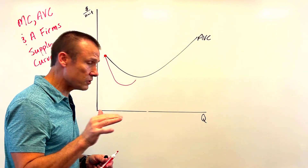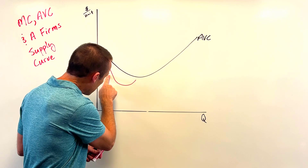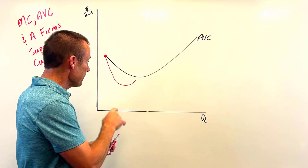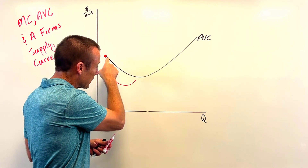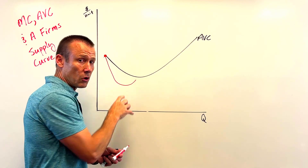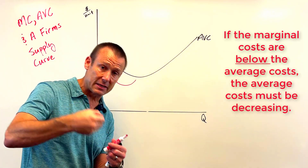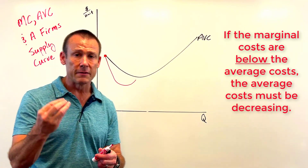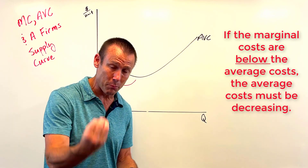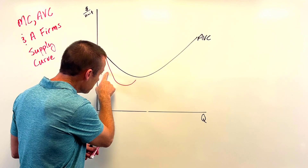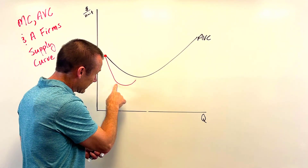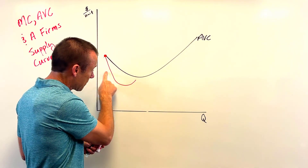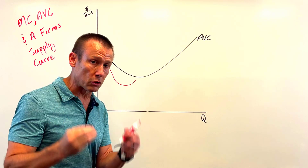Marginal cost is going down and then going up. What's important to note is that average variable cost is going down as long as MC is below it. If that cost of the additional unit is below the average, it's pulling the average down — just like your grades. If your next grade is below your average, it pulls your average down.